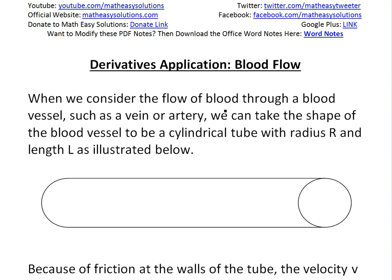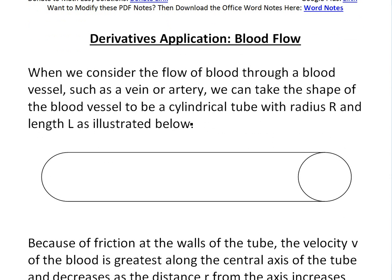When we consider the flow of blood through a blood vessel, such as a vein or artery, we can assume the blood vessel is a cylindrical tube with radius R and length L.